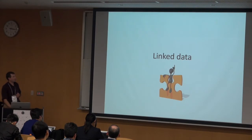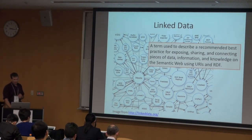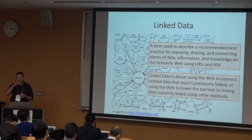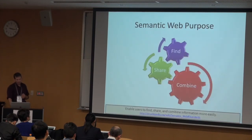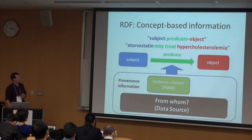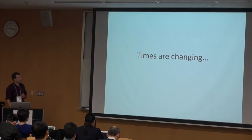Linked data is a term to describe the practice of exposing data and connecting it together — really it's about linking data that hasn't been linked before. One of the big problems we have is that we have loads of provenance information: lots of facts with many people telling us a lot of the same thing.